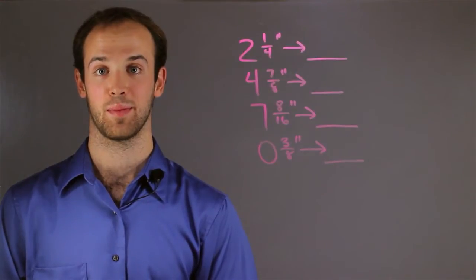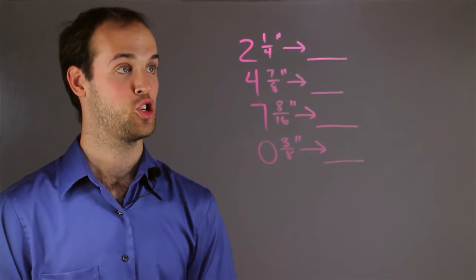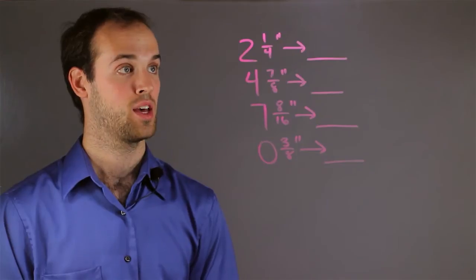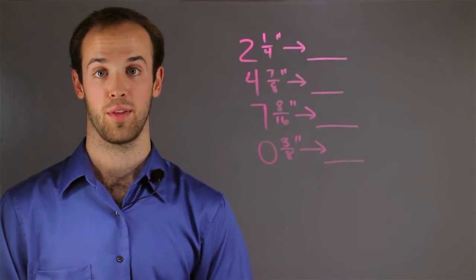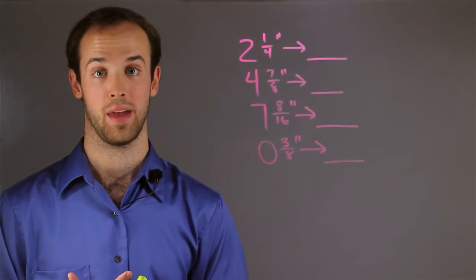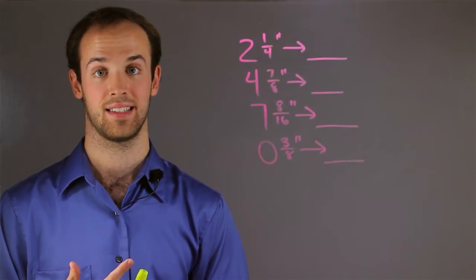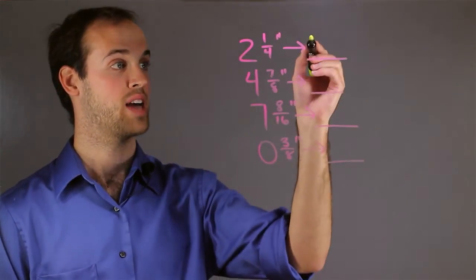So let's take a look at some examples. We have two and a quarter inch. So again, I want to look at the fractional part and I see that it's one fourth. Is that more or less than half? Well, two fourths would be half, so I know that one fourth is less. So this would round down to two inches.